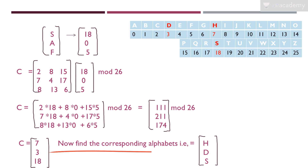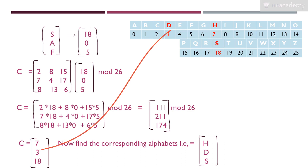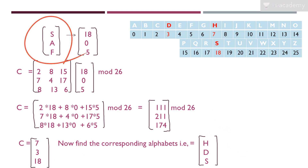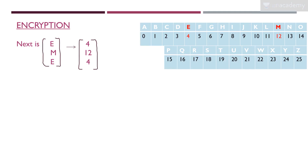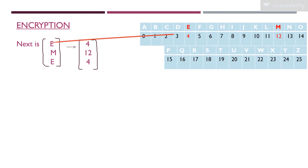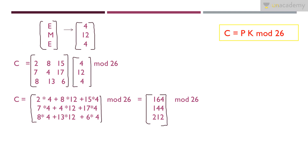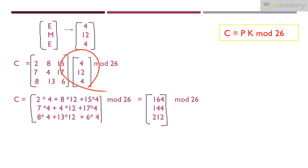Taking the modulus: 111 mod 26 = 7, 211 mod 26 = 3, 174 mod 26 = 18. Converting to alphabet letters: 7=H, 3=D, 18=S. So SAF is encrypted to HDS. The next trigraph is EME, with integer values E=4, M=12, E=4, giving column vector [4, 12, 4].